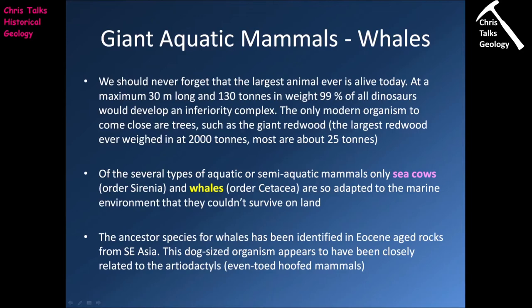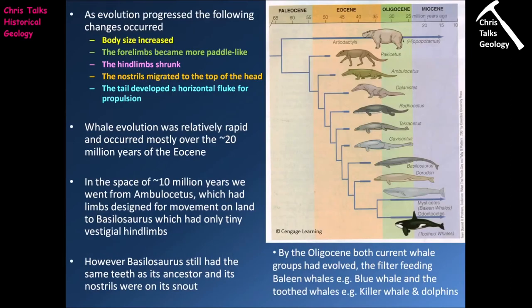The ancient species from which the whales evolved has been identified from Eocene age rocks from Southeast Asia, with Pakistan being the primary location. This dog-sized organism appears to have been closely related to the artiodactyls — the even-toed hoofed mammals — and part of a lineage that eventually gave rise to a group including hippos. As whale evolution progressed, we see an increase in body size, forelimbs becoming more paddle-like, hind limbs shrinking, nostrils migrating to the top of the head, and the tail developing a horizontal fluke for propulsion.